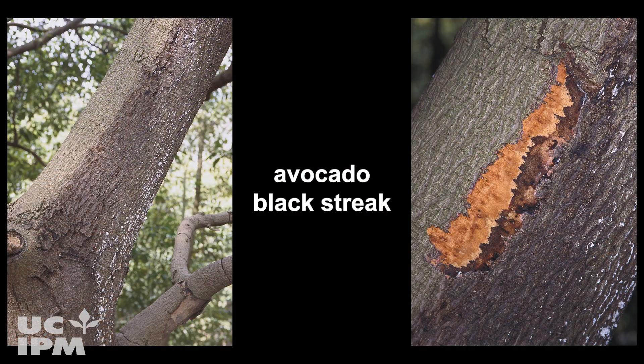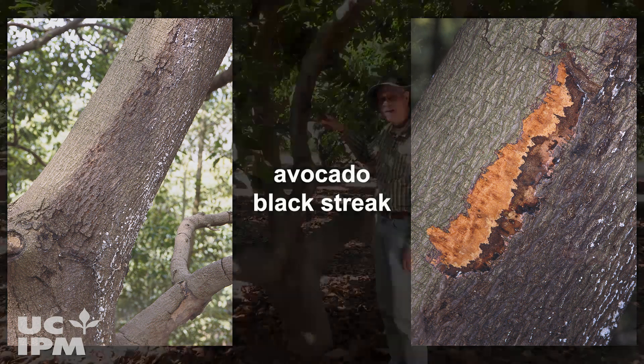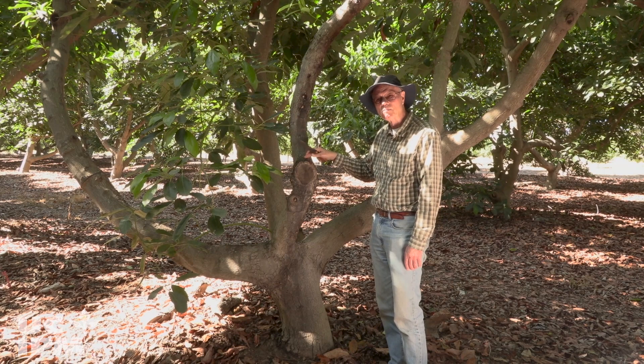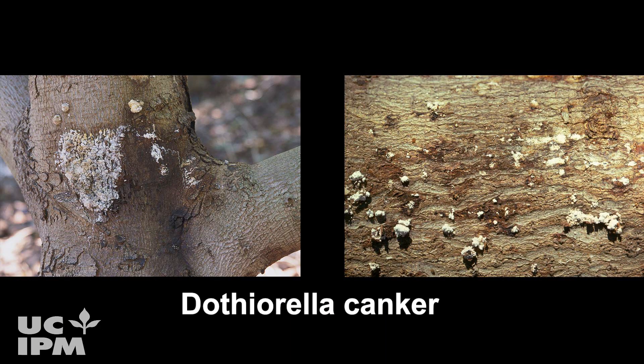Black streak, which is another type of canker, will often show up higher up in the canopy, the way bacterial canker does. And then we have another one called Dothiorella canker, which usually shows up higher in the canopy, but occasionally it can be down around the base of the tree as well.